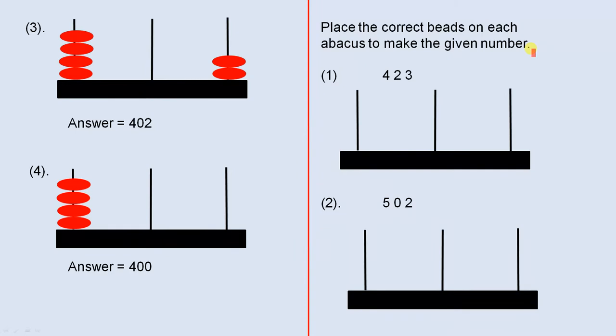Place the correct beads on each abacus to make the given number. So 423. So there are 3 ones, which means 1, 2, 3, 2 tens there, and 4 hundreds. 1, 2, 3, 4. So that's 423.